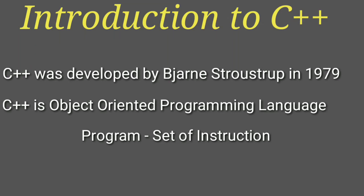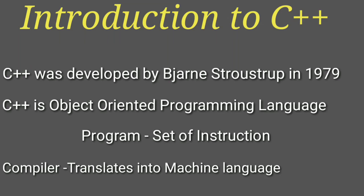What is a program? A program is a set of instructions which is executed by the computer. A compiler is a program which translates high-level languages into machine languages. Machine languages are zeros and ones — the machine can understand only zeros and ones — and human-understandable languages are called high-level languages.